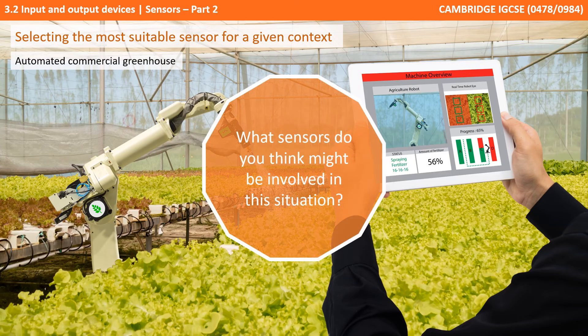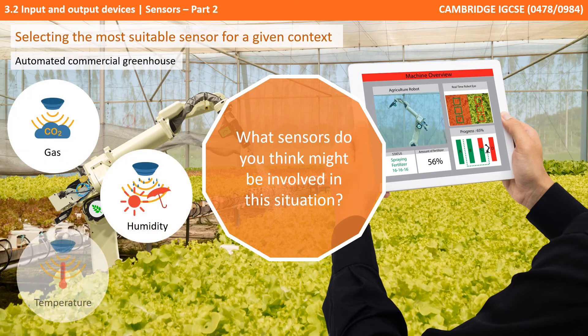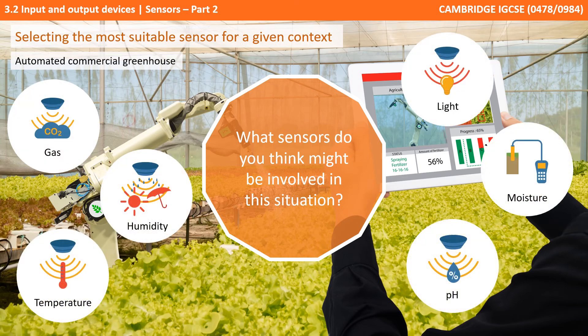Let's try one more. Here we have an automated large scale commercial greenhouse. Pause the video and think about what sensors could be involved. There are all sorts we could easily justify: gas sensors for the amount of oxygen and CO2, humidity, temperature, light levels, moisture in the soil, and the pH of the soil — a whole range of sensors which you could easily justify would be appropriate for this context.